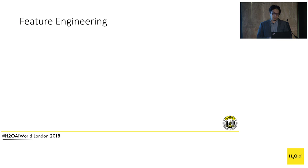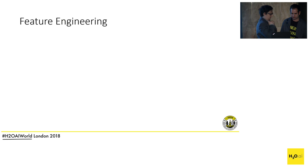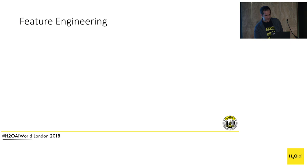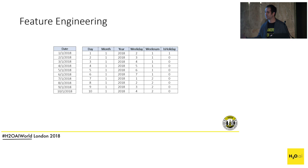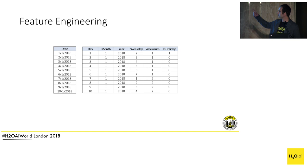Now my colleague Matthias will take over to cover feature engineering. Regarding feature engineering in Driverless AI: first, we have basic feature engineering — if you have a date, we extract simple things like the day, month, and year. We also extract whether it's a holiday or not, because for certain types of data that's really valuable information, and it's also information we can create for our test datasets.